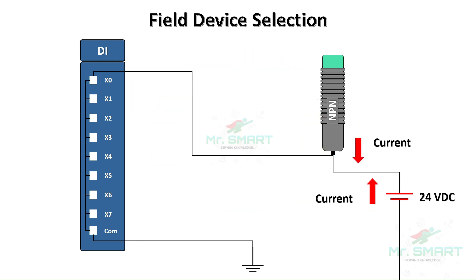If you connect a sinking field device to a sinking I/O module, or a sourcing field device to a sourcing I/O module, the circuit won't complete and the device will not operate. In this scenario, both the module and the field device are trying to supply current, but there is no proper ground path. The circuit remains open, no current flows, and the device won't function as expected. This mismatch can also potentially lead to errors or faults in the system.